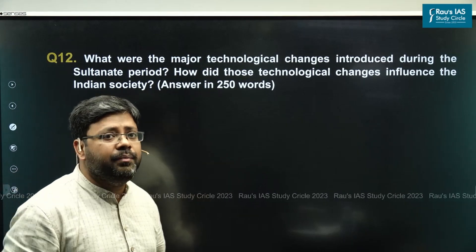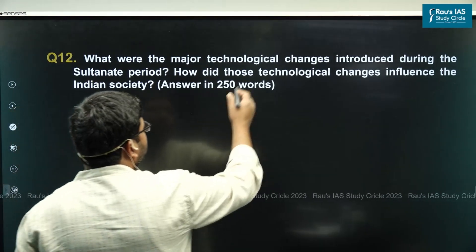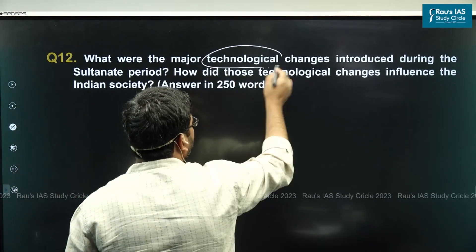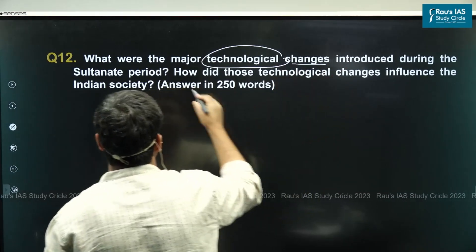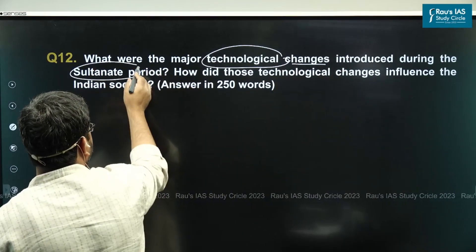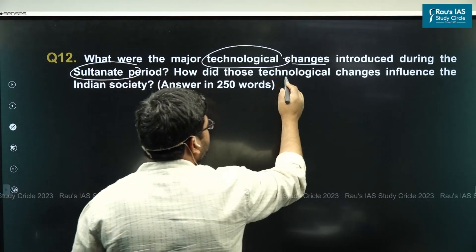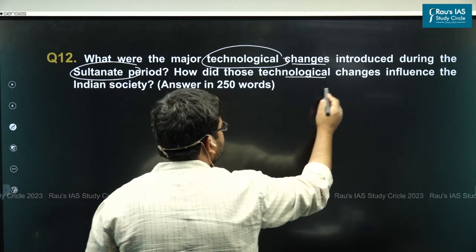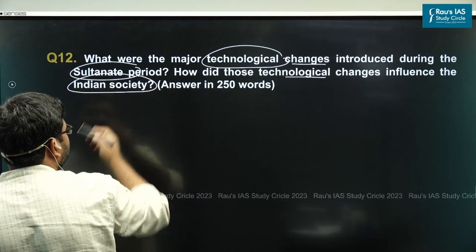This is a mains question: What were the major technological changes introduced during the Sultanate period? How did those technological changes influence Indian society?